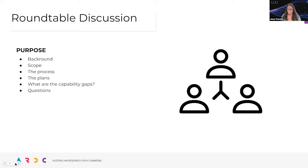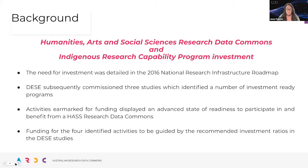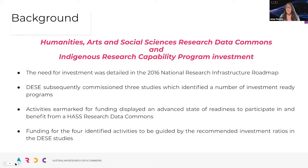A little background: the need for investment in both humanities, arts and social sciences, and Indigenous research was detailed in the 2016 National Research Infrastructure Roadmap. The Department of Education, Skills and Employment subsequently commissioned three studies which identified a number of investment-ready programs. The activities earmarked for this initial round of development displayed an advanced state of readiness, and funding has been guided by the recommended investment ratios in those DESE studies.